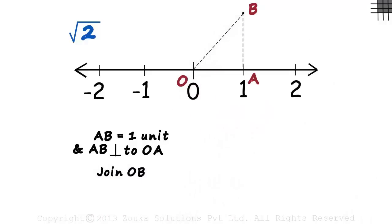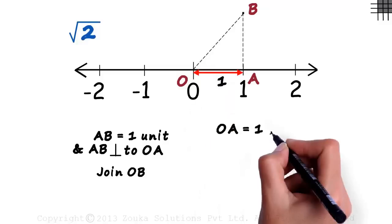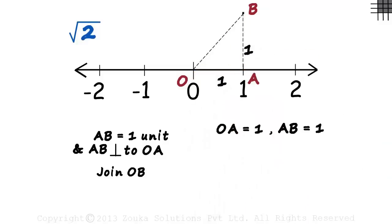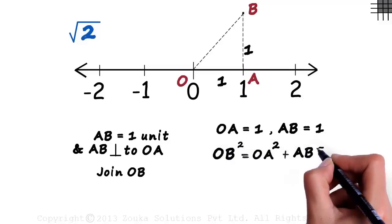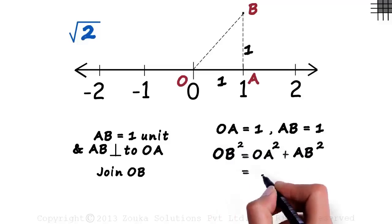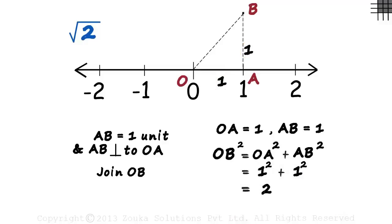Let's analyze the figure. We have OA equal to one unit and AB equal to one unit. Using the Pythagorean theorem, we have OB squared equal to OA squared plus AB squared. That would equal one squared plus one squared, which is 2. Taking the square root on both sides, we get OB equal to root 2 units.